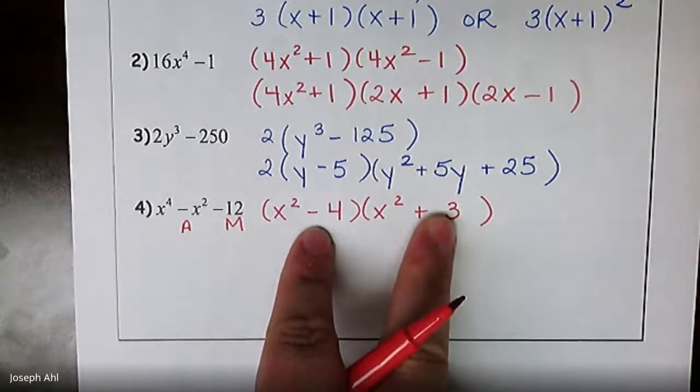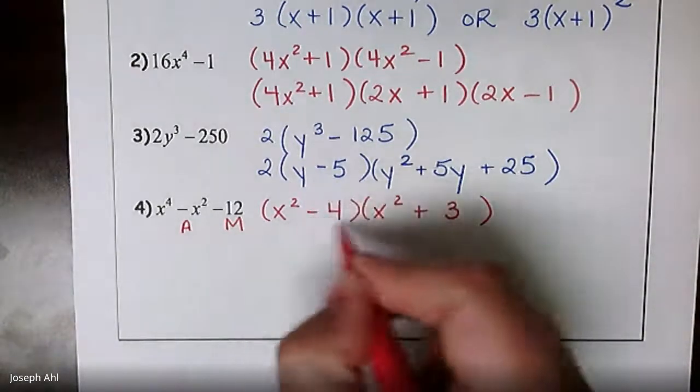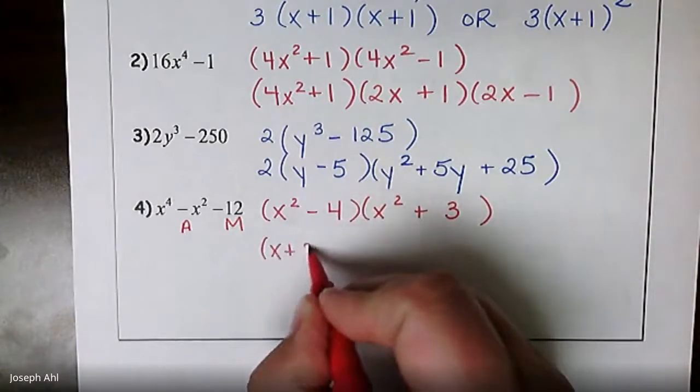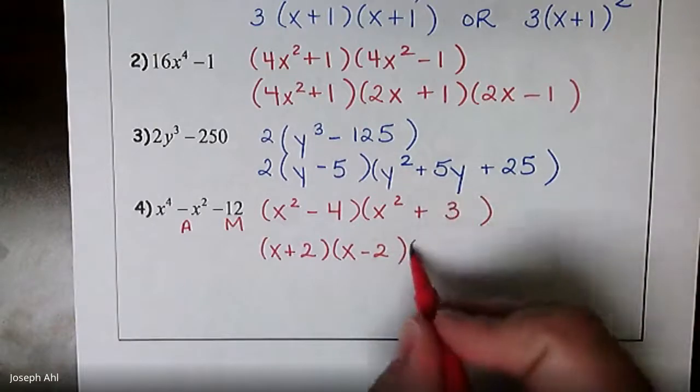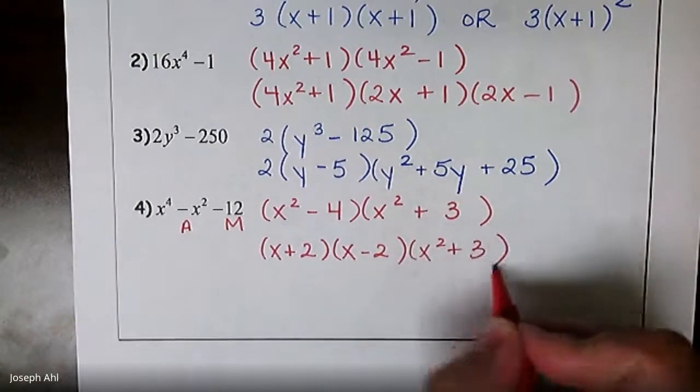And the answer is, yeah, we can factor x² - 4. So make sure you continue to break that down to x + 2 and x - 2. The x² + 3 factor that couldn't be broken down further, make sure you just carry that down to your final answer. And that's actually a really quick day three lesson.